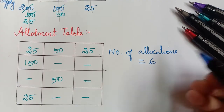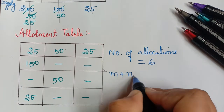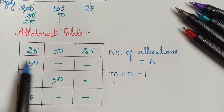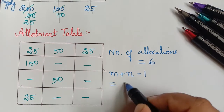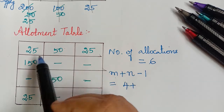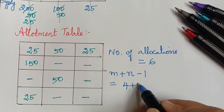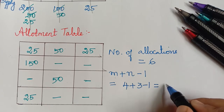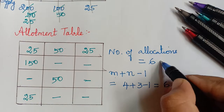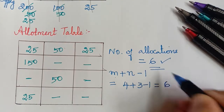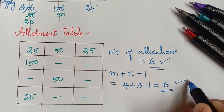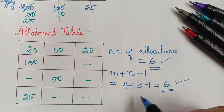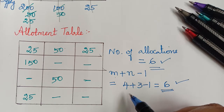We verify the solution by checking the number of allocations, which is 6. We calculate m plus n minus 1, where m is the number of rows (4) and n is the number of columns (3), giving 4 plus 3 minus 1 equals 6. Since the number of allocations equals m plus n minus 1, this is a non-degenerate basic feasible solution.